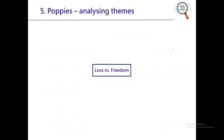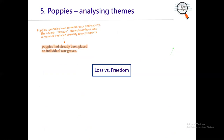Finally, loss and freedom. Poppies had already been placed on individual war graves — returning to the beginning of the poem. Poppies symbolise love, remembrance, and tragedy. The adverb 'already' is interesting because it shows how those who remember the fallen are early to pay their respects. The speaker notices each individual grave — this is perhaps a reflection of how she feels personally affected, just like all the others, by what has happened to her son. She's one of them now, one of the people personally affected — more so if you believe he's died.